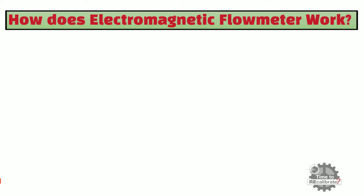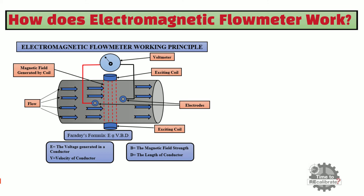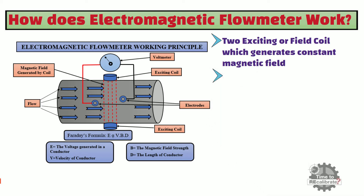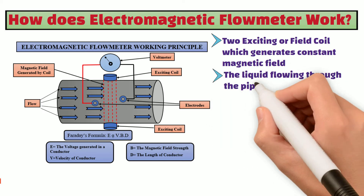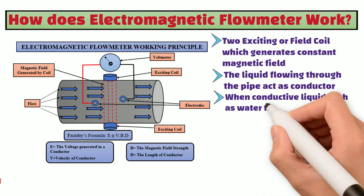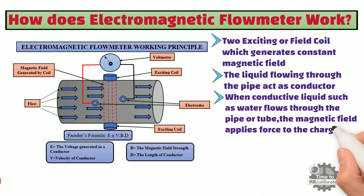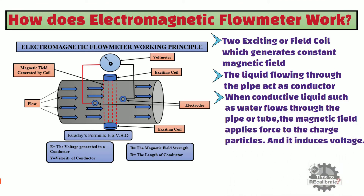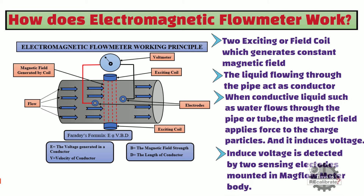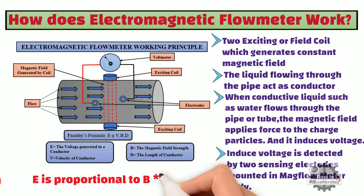Now, how does an electromagnetic flowmeter work? As you can see from the picture, the mag flowmeter has two exciting coils that generate a constant magnetic field. The liquid flowing through the pipe acts as a conductor. When conductive liquid such as water flows through the pipe, the magnetic field applies force to the charged particles and induces a voltage. This induced voltage is detected by two sensing electrodes mounted in the mag flowmeter body. The induced voltage E is proportional to B × V × L.